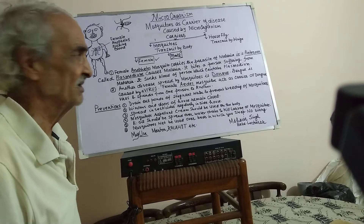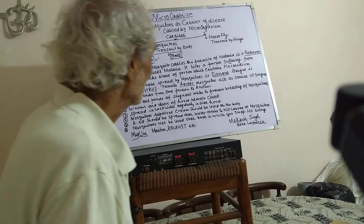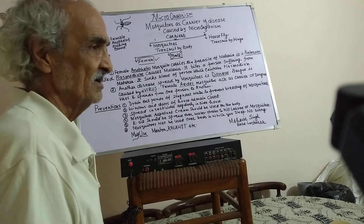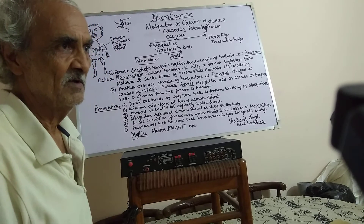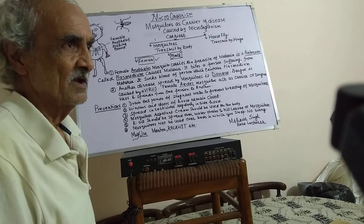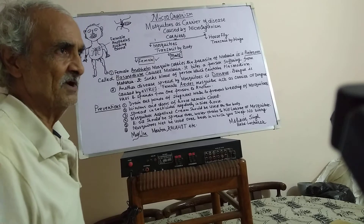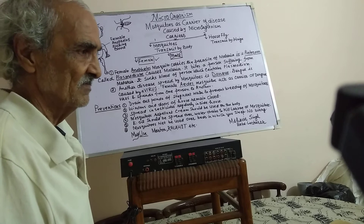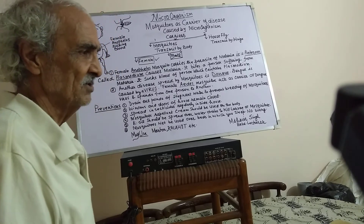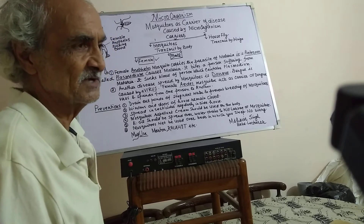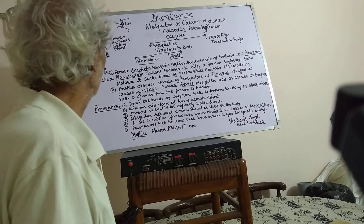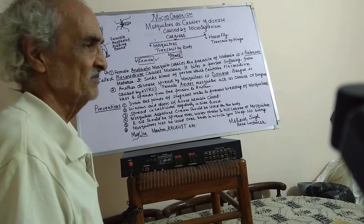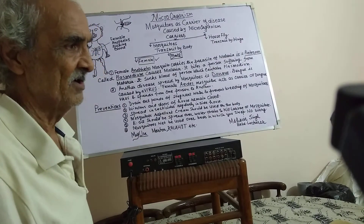The mosquito carries the parasite of malaria. It is a protozoan called Plasmodium, which causes malaria. The mosquito bites an infected person and takes their blood. When it then bites a healthy person, it transfers the blood containing Plasmodium, causing that healthy person to suffer from malaria.